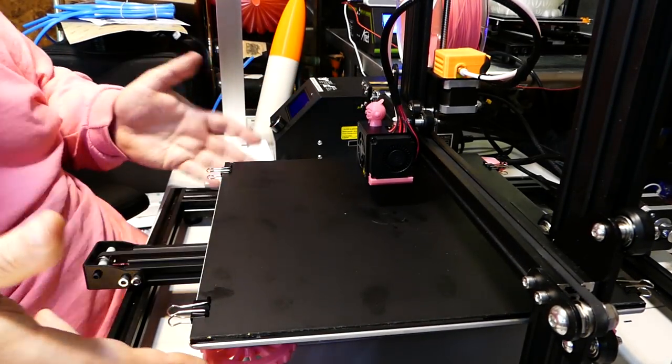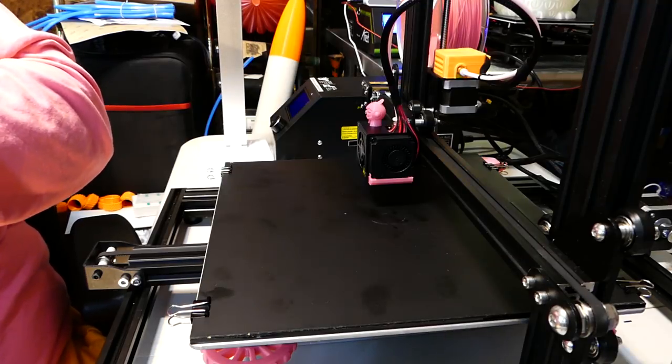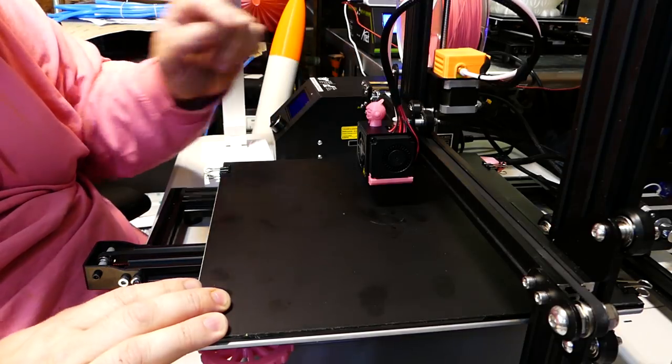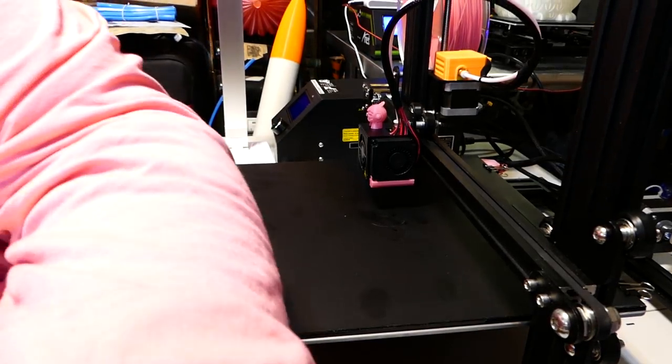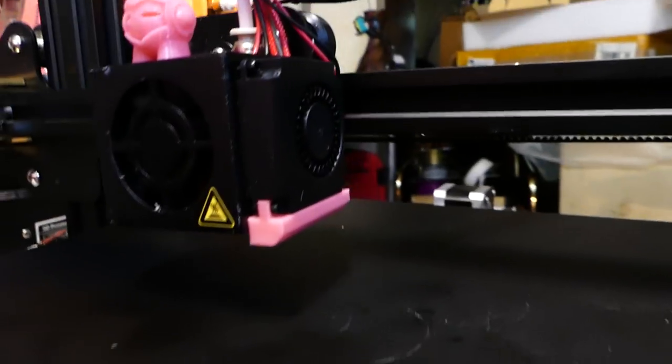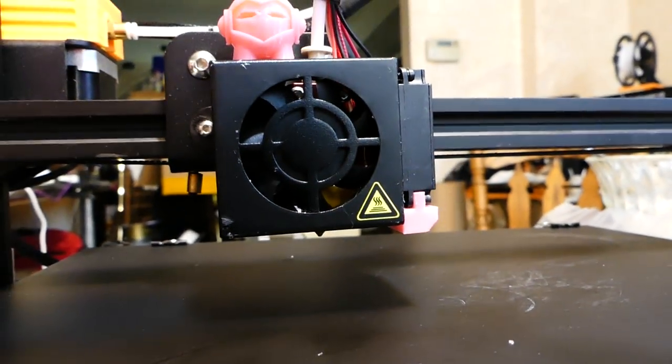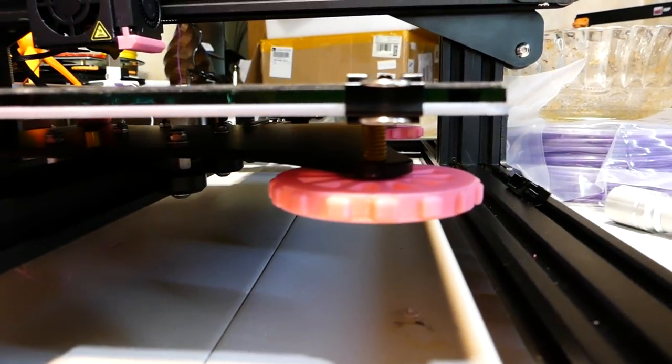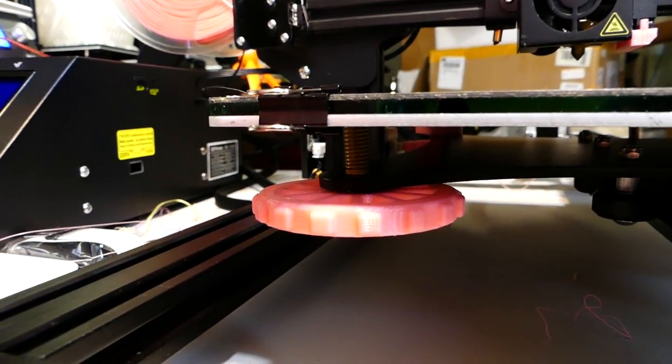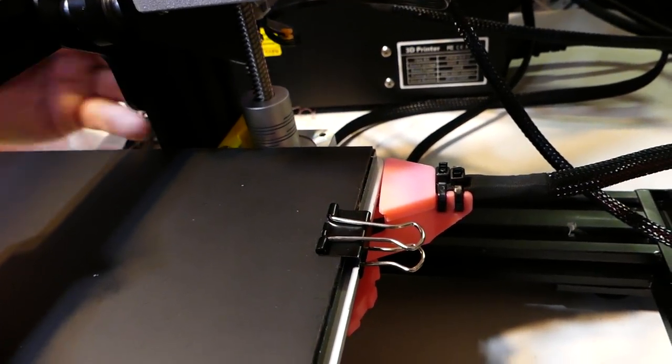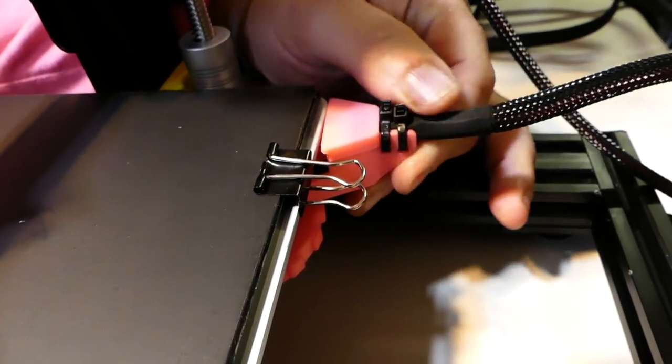Fan shroud. Leveling knob. And strain relief for the bed. Let me give you a better view of some of these parts. So here is your fan shroud. Here's your leveling knobs. And here. Here's your strain relief. For your wires. Here. That's all it is.